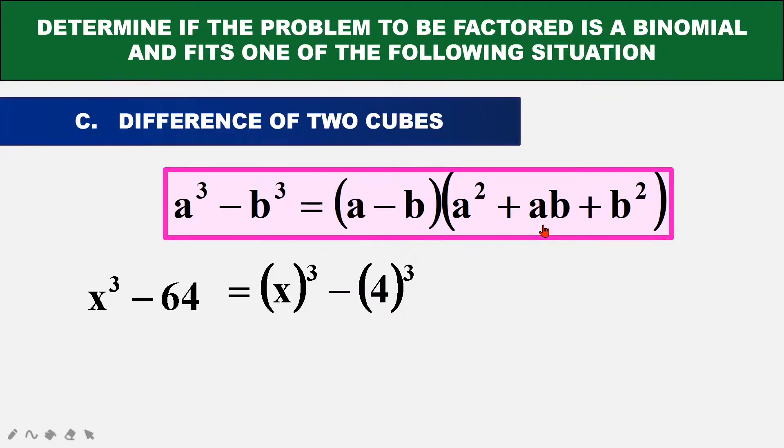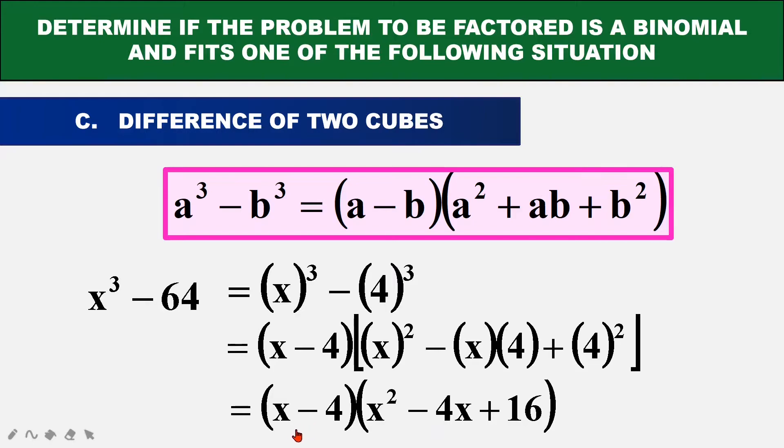Then we can put it into this formula. So we will have A as X and our B as 4. Then we fill it in and we simplify. So we have the first factor is X minus 4 and the second one is X squared minus 4X plus 16.